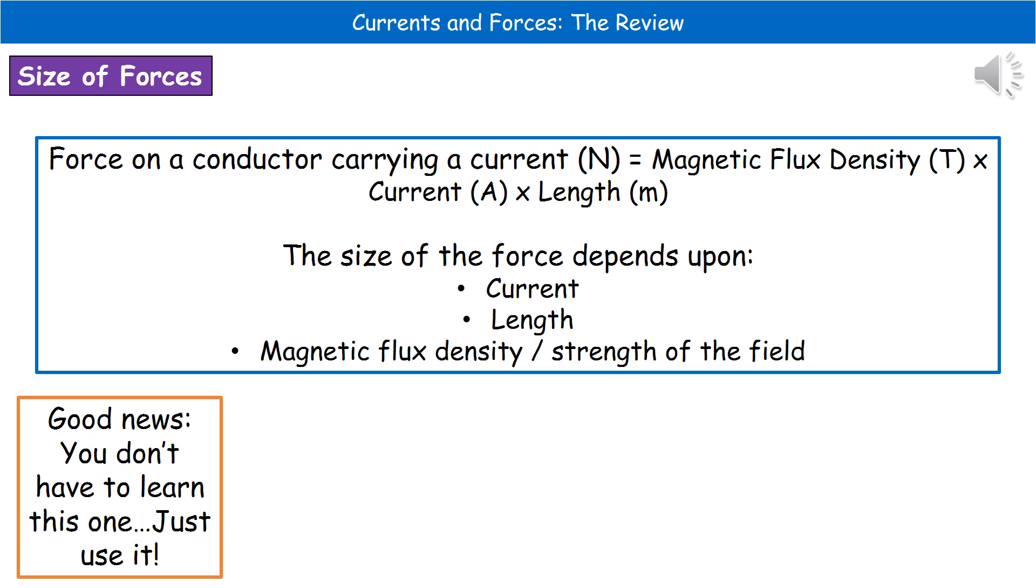All of those go together to give us the calculation you can see at the top there. To calculate the force on a conductor carrying current, which is measured in newtons as it's a force, all we do is the magnetic flux density in teslas times the current in amps times the length in meters. As always with these questions, just be careful that if they've given you the length in centimeters, you convert it first before putting it into the equation.